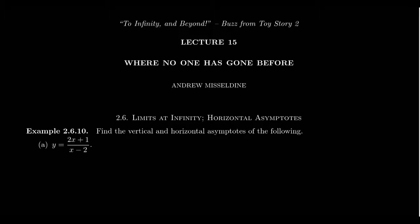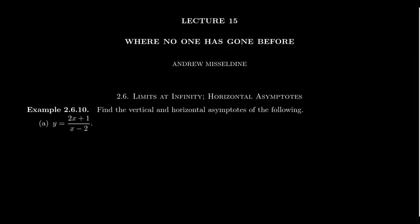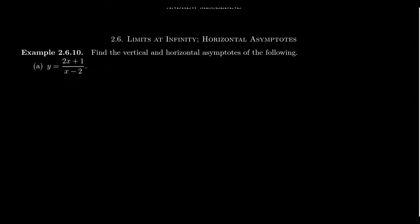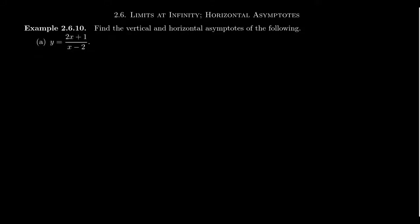In lecture 14, we introduced the idea of a vertical asymptote and a horizontal asymptote. What I want to do at the start of lecture 15 is to actually try to distinguish the differences between them, because they both involve limits at infinity in a manner of speaking, but they are different types of limits at infinity.